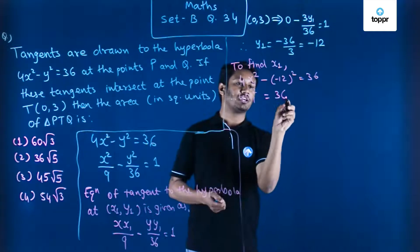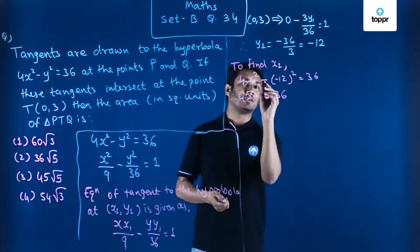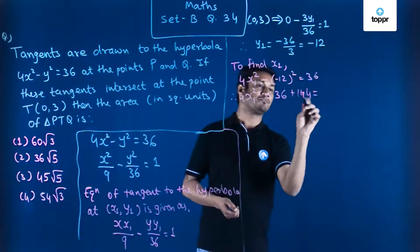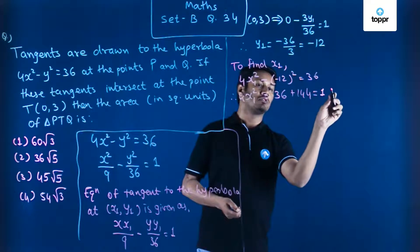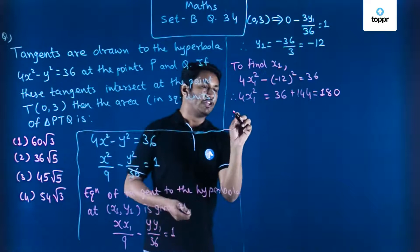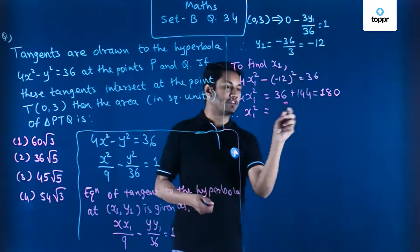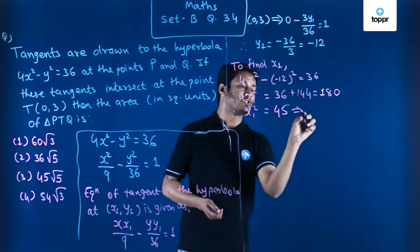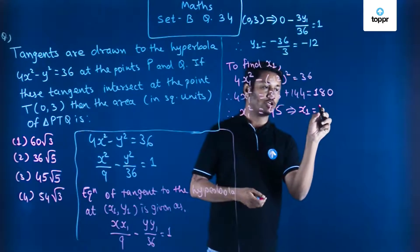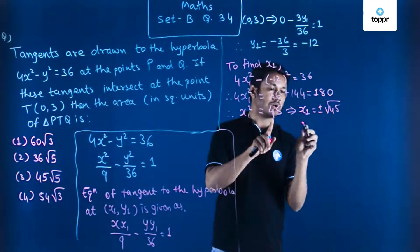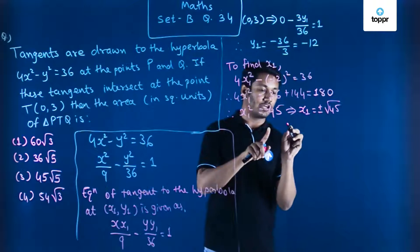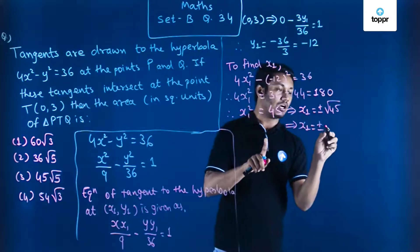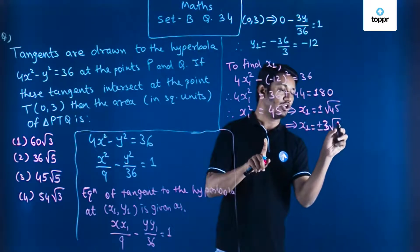This gives 4x₁² equal to 36 plus 144, which is 180. Therefore x₁² equals 180 divided by 4, which is 45. So x₁ equals plus or minus √45, and since √45 equals √(9×5) equals 3√5, we get x₁ equal to ±3√5.